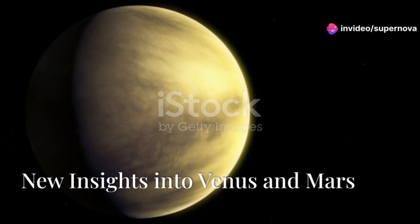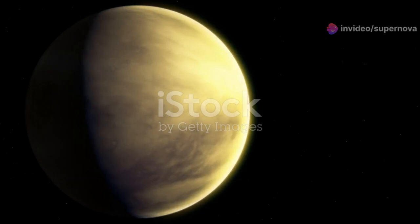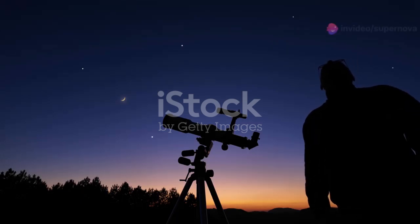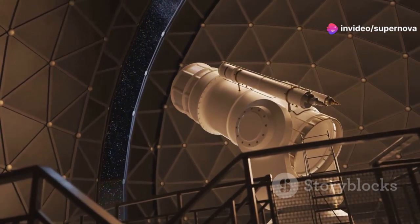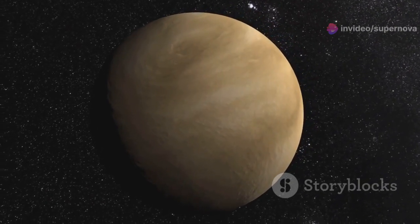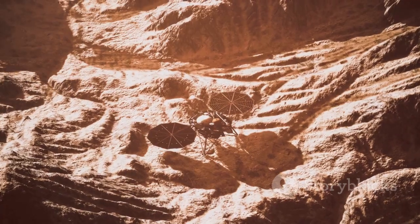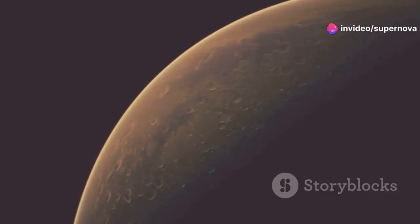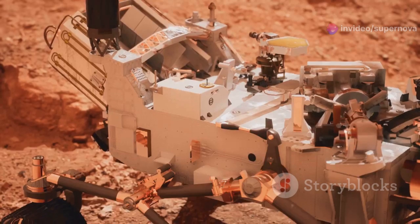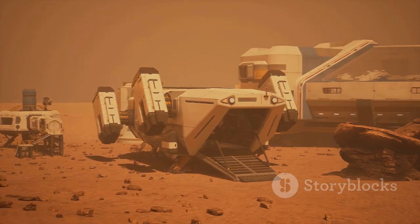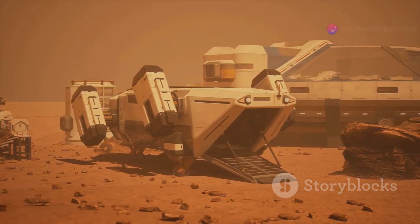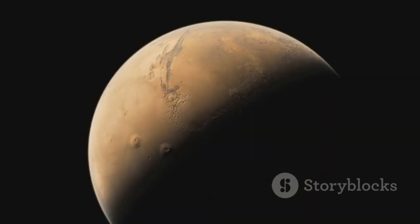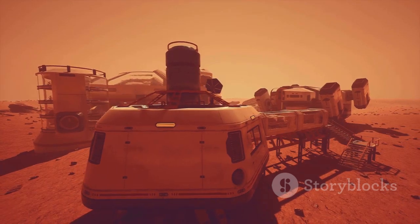Planetary neighbors, new insights into Venus and Mars. Venus and Mars are planetary neighbors. They have fascinated astronomers for centuries. JWST is providing new insights into these planets. JWST's infrared vision allows it to see through Venus's thick atmosphere. It's studying the planet's surface. It's looking for signs of volcanic activity. On Mars, JWST is studying the planet's atmosphere. It's looking for signs of methane. Methane could be a sign of life, or it could be produced by geological processes. JWST's observations of Venus and Mars are helping us understand these planets better. They are providing clues about their past. They are giving us a glimpse into their future.